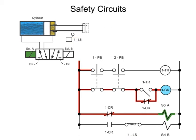At this point in the cycle, the cylinder will remain extended indefinitely until at least one push button is released. If one push button is released, the control relay will lose power, which causes 1-CR to remove power from solenoid A and connect power to solenoid B.